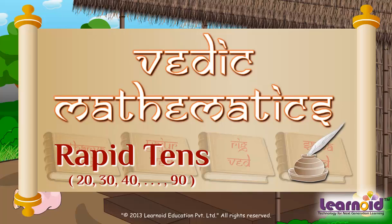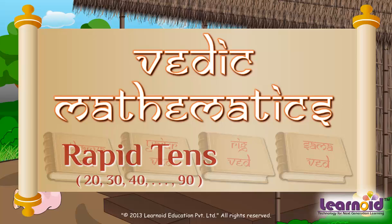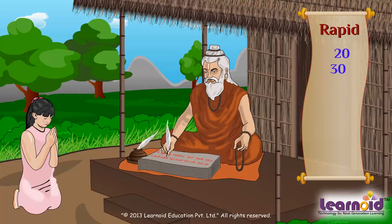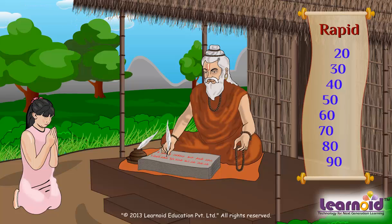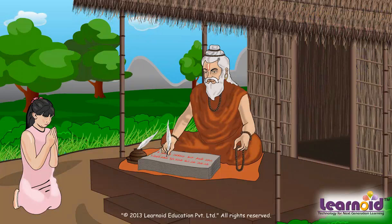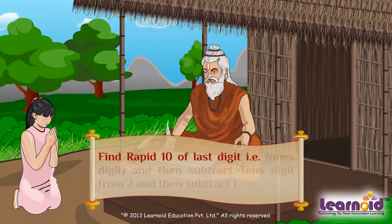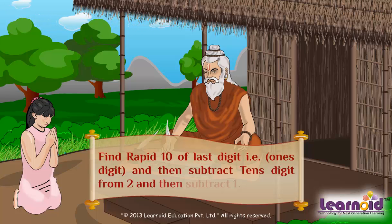Rapid Tense. After learning rapid 10, we will now learn finding rapid of any multiple of 10, such as rapid 20, 30, 40, 50, 60, 70, 80, and 90. I will give you a sutra for finding rapid 20 of any number less than 20: find rapid 10 of the last digit (the 1's digit), then subtract the 10's digit from 2, and then subtract 1.